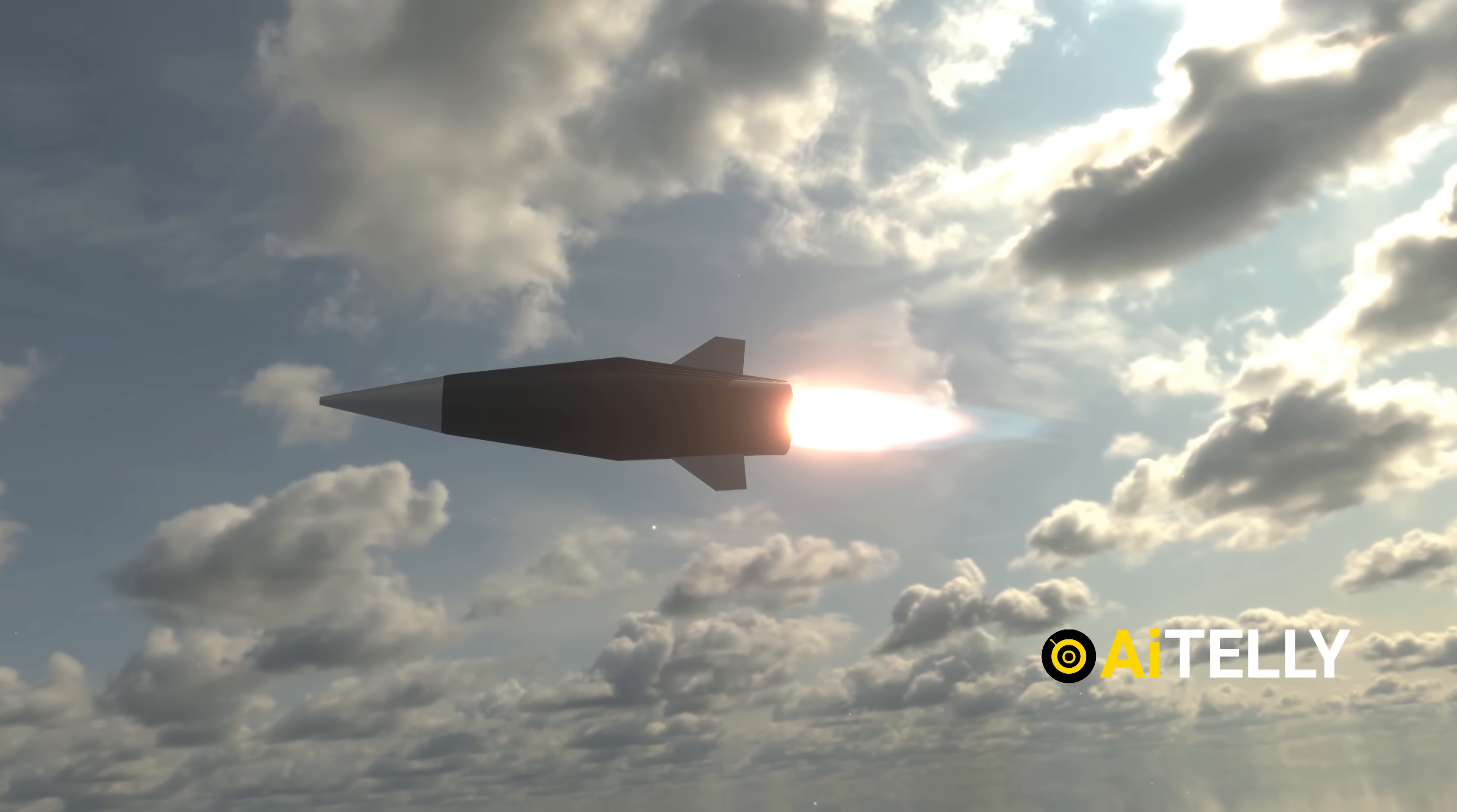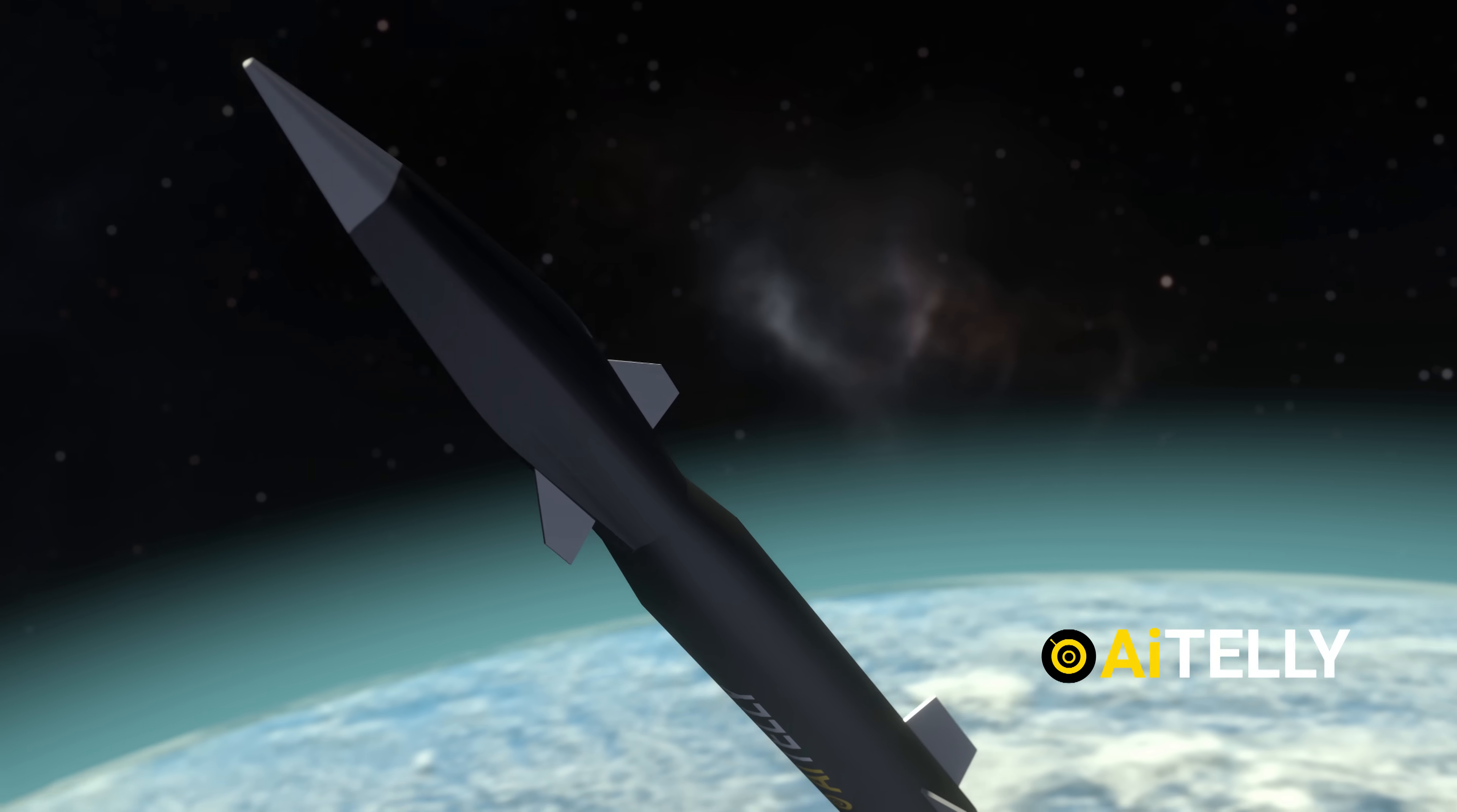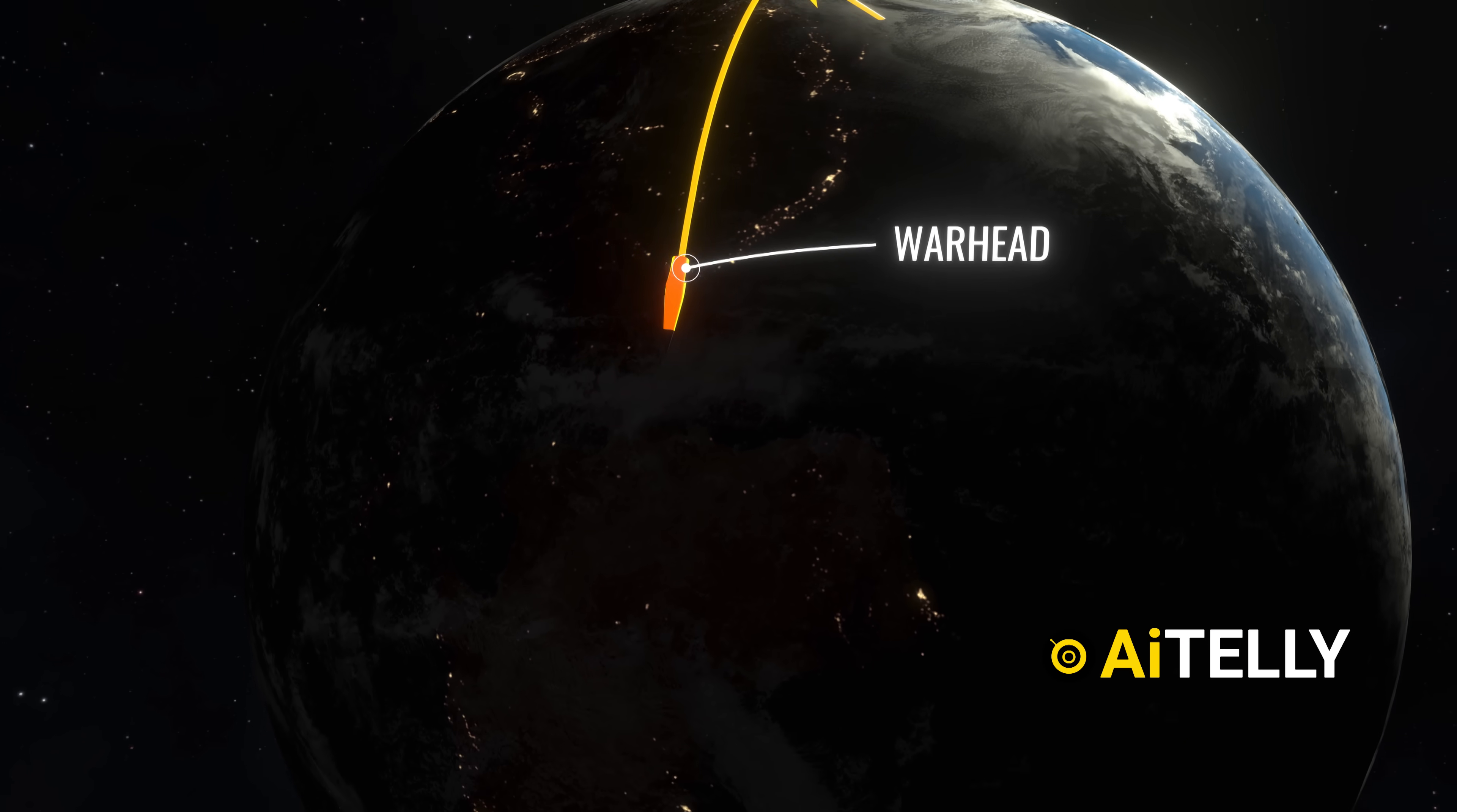The process begins with the launch where FOBS is propelled by a rocket similar to an intercontinental ballistic missile, ICBM. Unlike traditional missiles that follow a direct ballistic trajectory toward a target, FOBS places its payload into low Earth orbit. Once in orbit, the payload, often a nuclear warhead, travels along a partial orbital path covering only a fraction of a full circle around the Earth. This partial orbit is the origin of its name, the Fractional Orbital Bombardment System. After reaching this orbit, the warhead has the ability to maneuver in space, adjusting its trajectory.